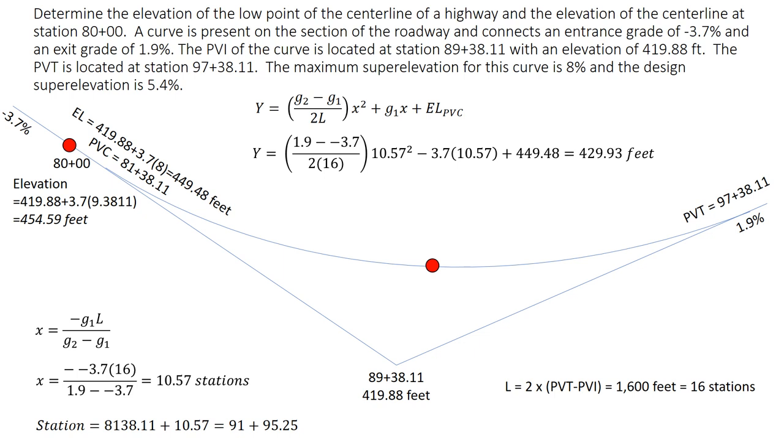And now we're plugging in our other values, our g1, our g2, our length. So y equals these inputs now. And so our elevation of our low point is 429.93.